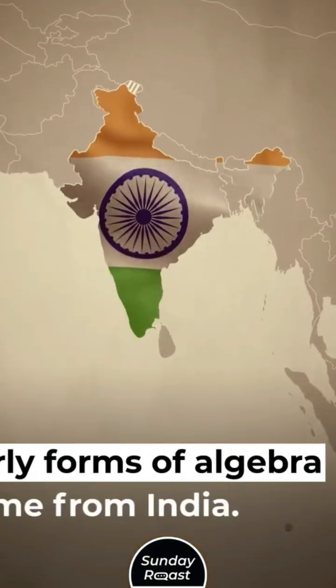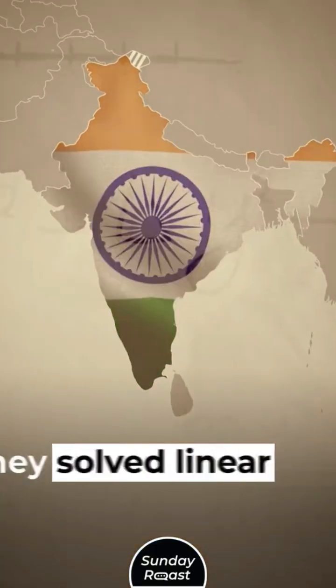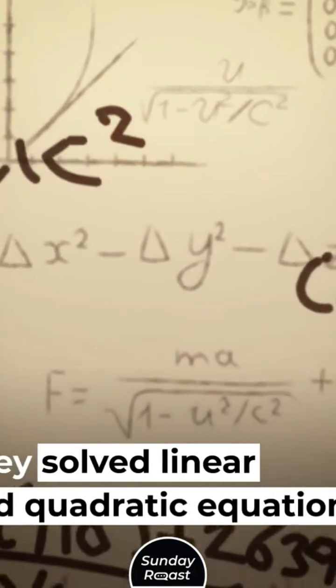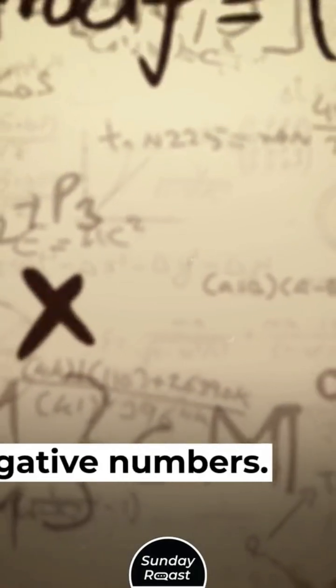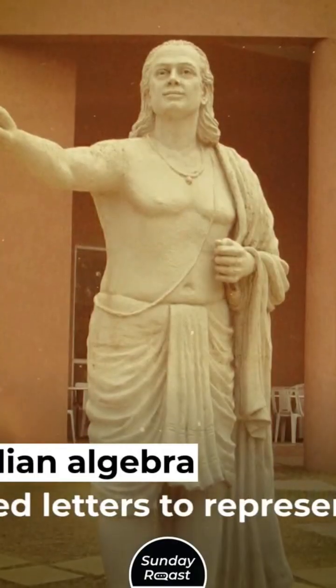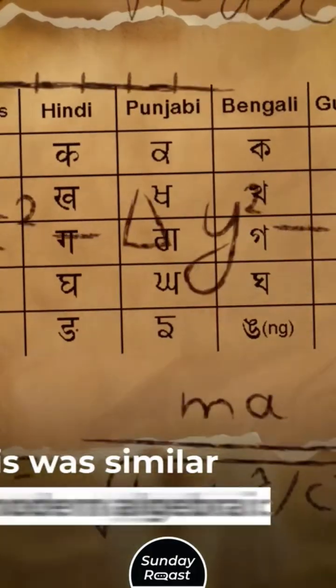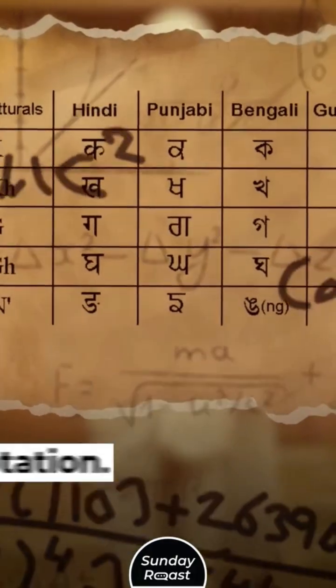Algebra. Early forms of algebra came from India. They solved linear and quadratic equations. They worked with both positive and negative numbers. Indian algebra used letters to represent unknowns. This was similar to modern algebraic notation.